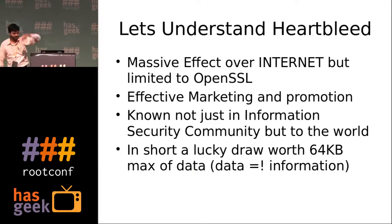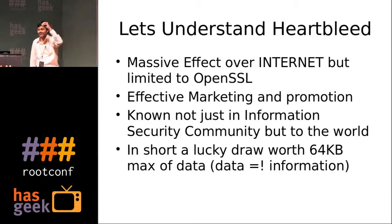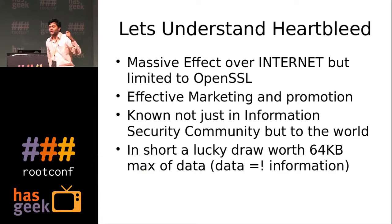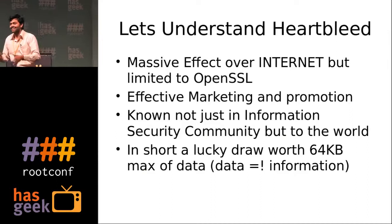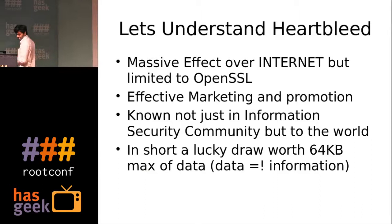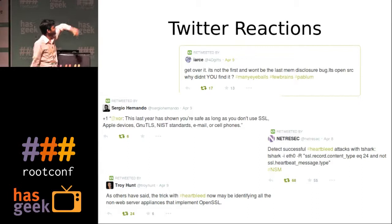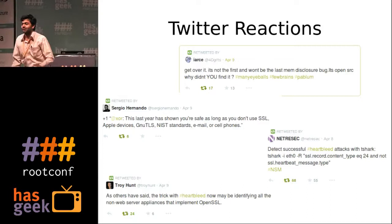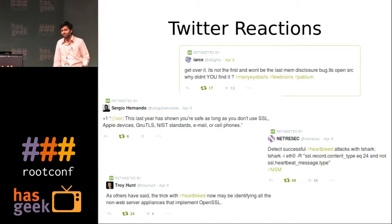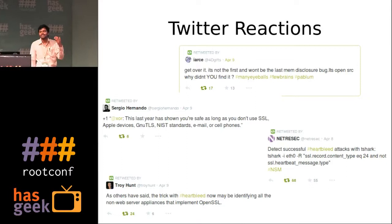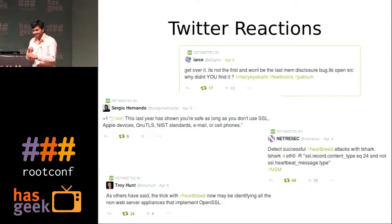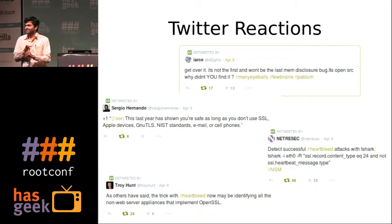The simplest abstract of this is: it's a lucky draw. You ask for some data, you may get any kind of data — and data is not equal to information. You may get valuable information, or you may not. This actually invoked a lot of Twitter reactions. It's a memory disclosure bug — people were cribbing about it, but it's not the end of the world. It's open source code; anyone can look at it and try to find more such flaws. 'You are safe as long as you don't use SSL, Apple devices, GNU TLS, NIST standards, emails, or cell phones' — which basically covers everyone.